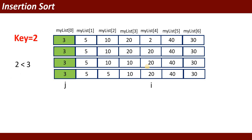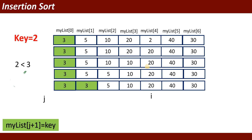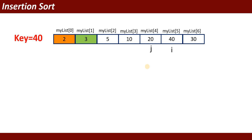J decrements again, now pointing to value 3. Is 2 less than 3? Yes, true — the value 3 moves one position ahead, giving us two 3s. Once j reaches zero, we increment j by 1 and insert the key at my_list[0]. In this way, the value 2 was picked from index 4 and inserted at index 0.